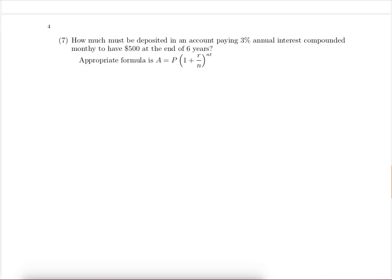This is periodic compound interest, and so this is the appropriate formula. Reading through the problem, the known information is that the rate of interest is 3%, which is 0.03 as a decimal. Because we're compounding monthly, n will be 12. The final amount, the future value, needs to be $500, and t is going to be 6.